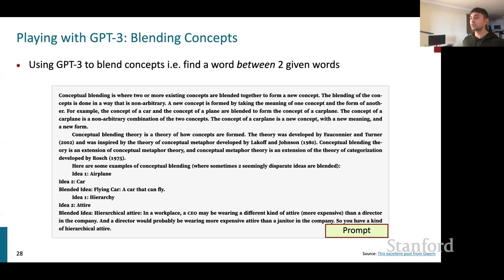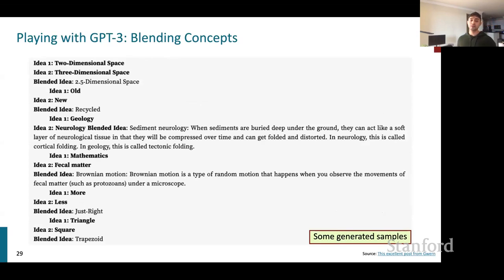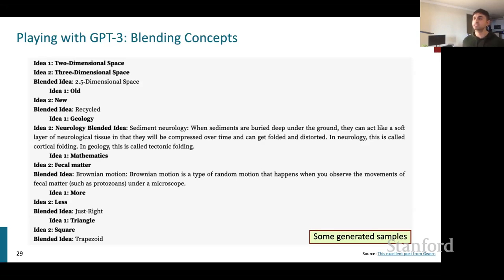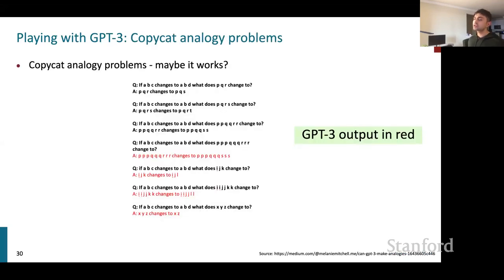In another example, the model is asked to blend concepts together. Given a definition of concept blending with examples — airplane plus car gives flying car — GPT-3 is then asked new problems. It answers: 2D space blended with 3D space gives 2.5D space; old plus new gives recycled; triangle plus square gives trapezoid. The really non-trivial one: geology plus neurology gives sediment neurology, which turns out to be correct. It can do these very flexible things just from a prompt.